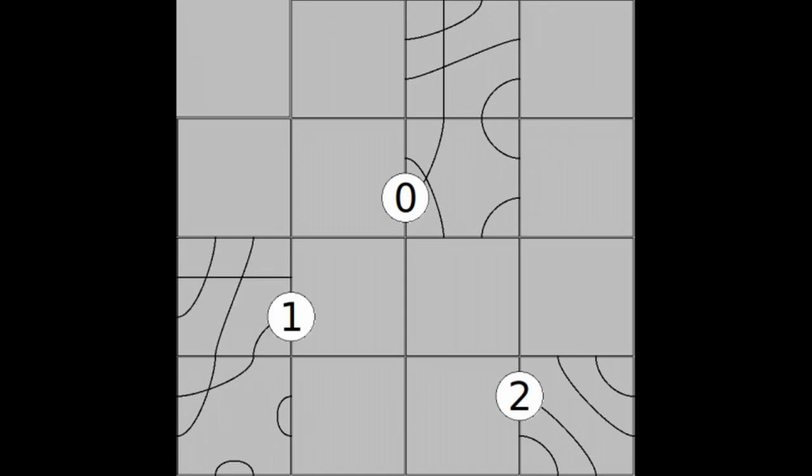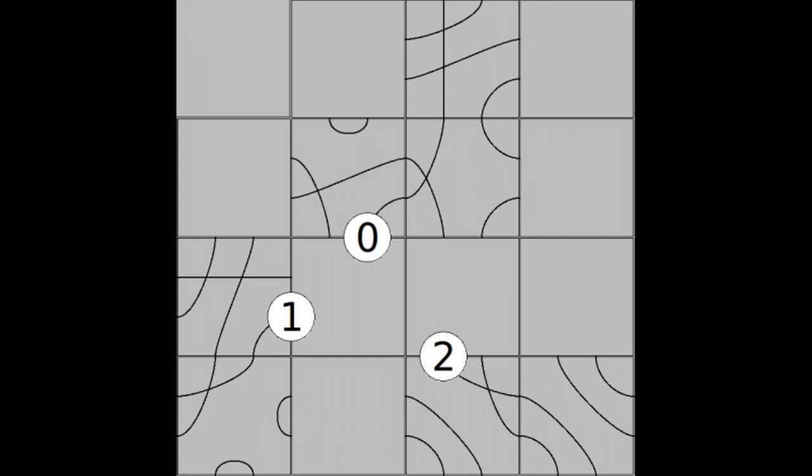The player starts their turn by drawing a tile and placing it next to their token on the grid with the orientation of their choosing. Each tile contains path segments that connect edges to each other. The player then concludes their turn by moving each token to the end of the newly extended path. Note that this tile can connect up multiple paths.